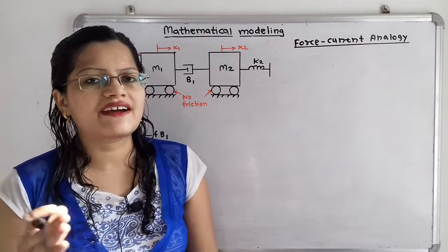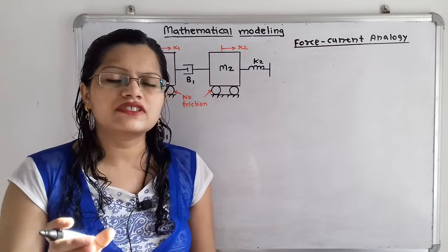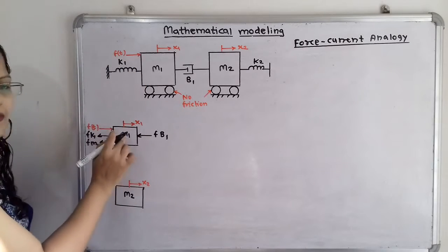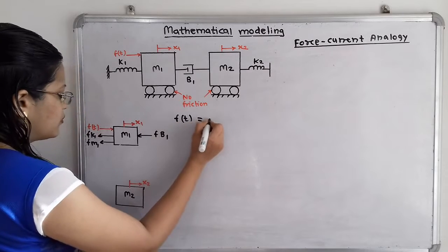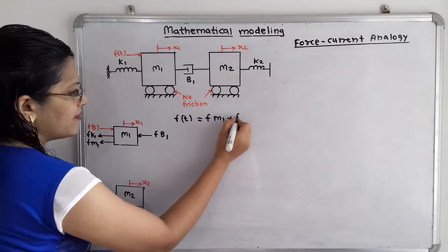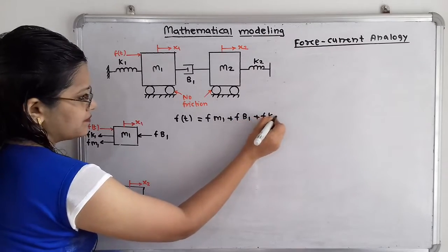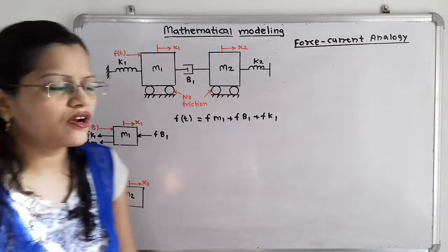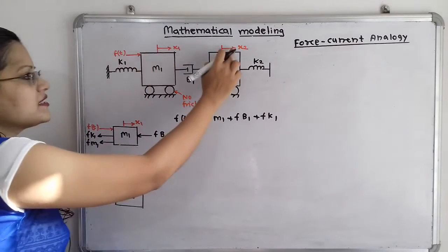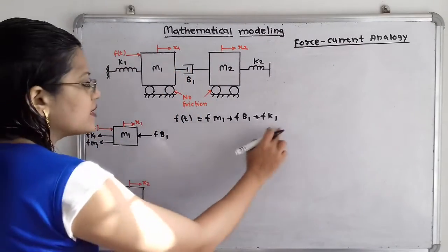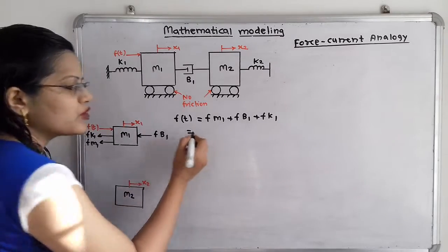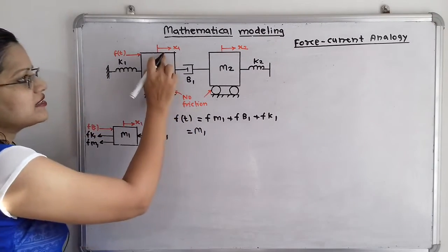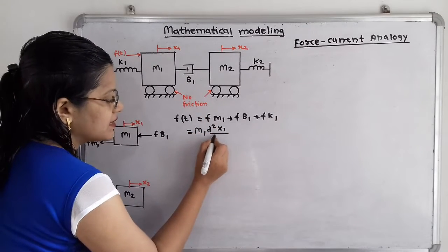Now we will apply Newton's second law of motion: the action force is equal to the sum of reaction forces. The action force F(t) is applied on mass M1, so we write: F(t) = Fm1 + Fb1 + Fk1. Now these reaction forces have to be defined in terms of displacement, because the input is force F(t) but the output is in terms of displacement. For the inertia force, the formula is M d²x/dt², where here we use M1 and X1: M1 d²X1/dt².